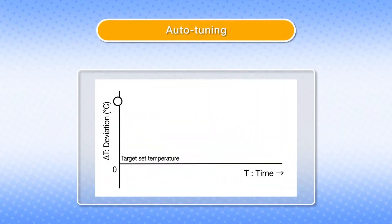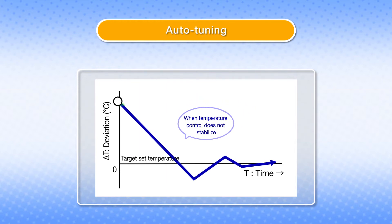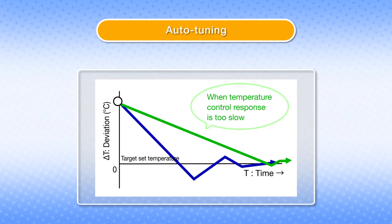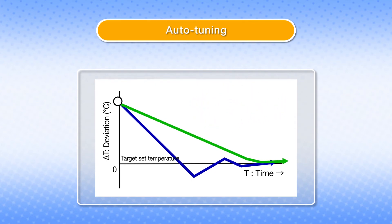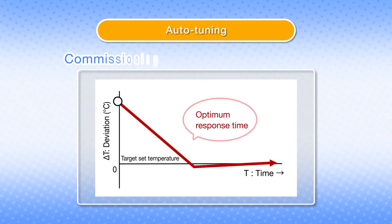The auto-tuning function automatically adjusts the response time optimally when oil temperature control does not stabilize after shipping, or when the responsiveness for temperature control needs to be adjusted. This significantly reduces adjustment time in commissioning.